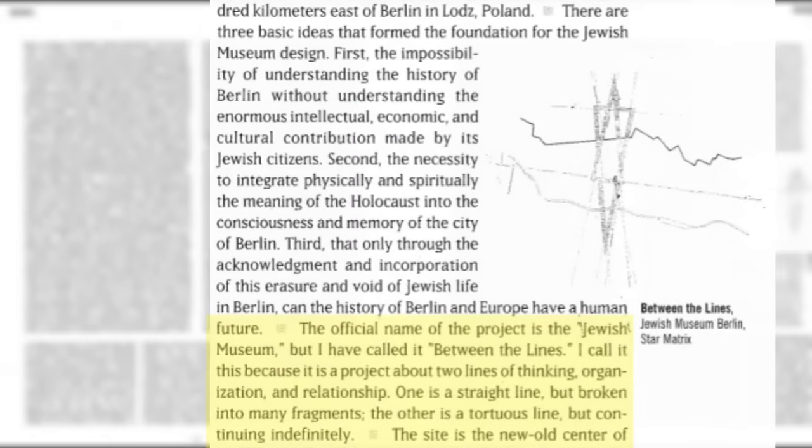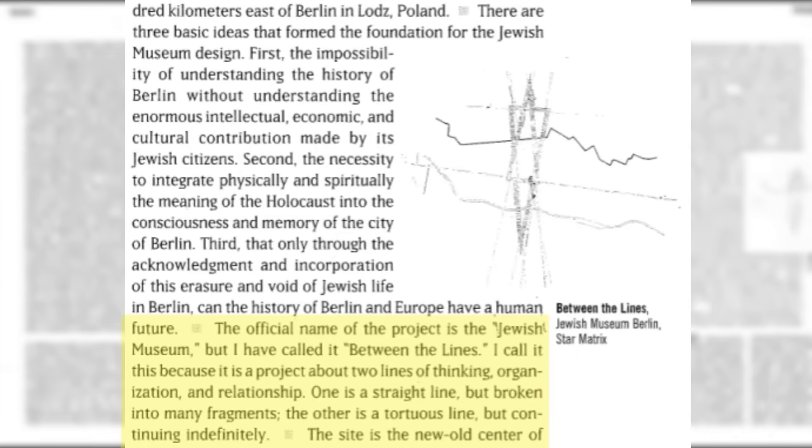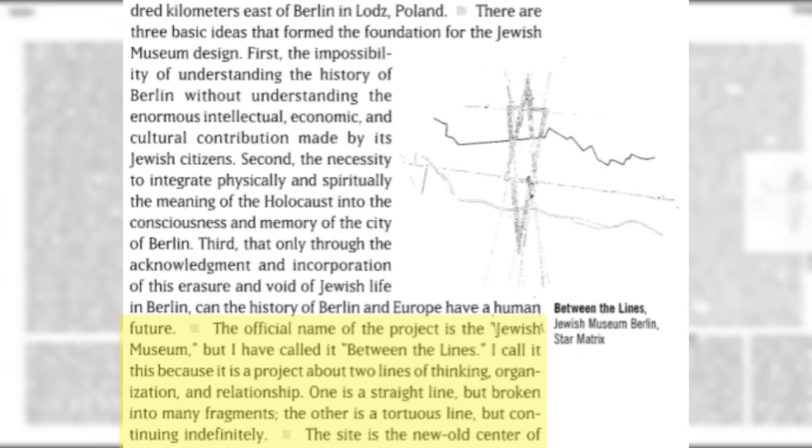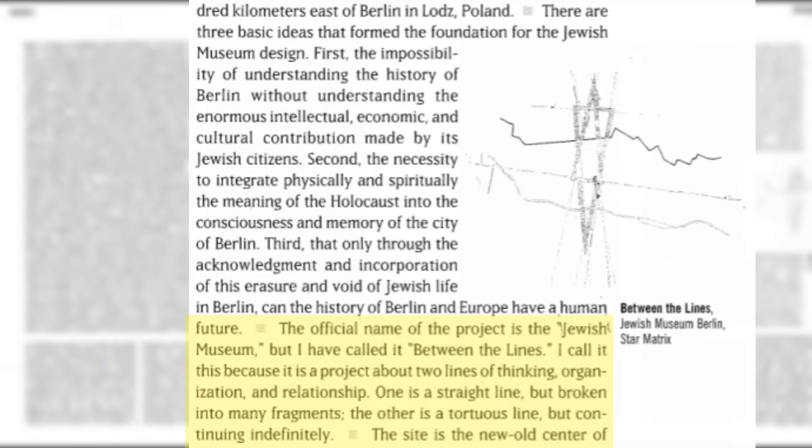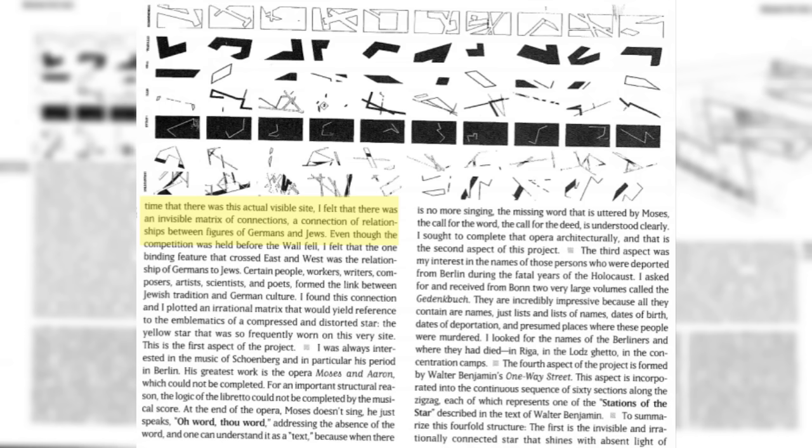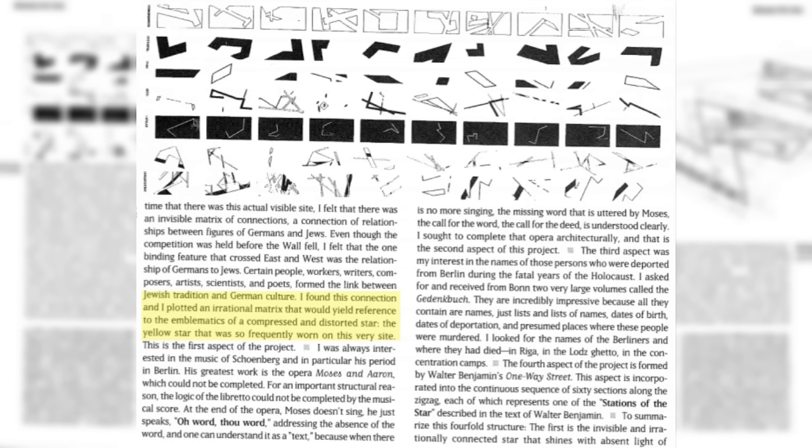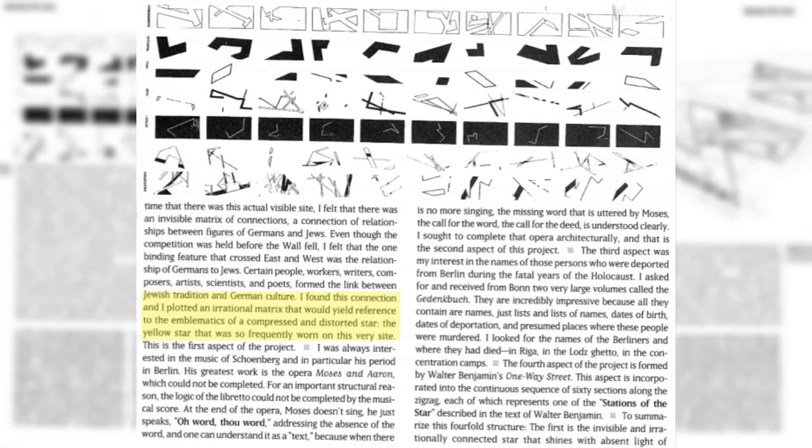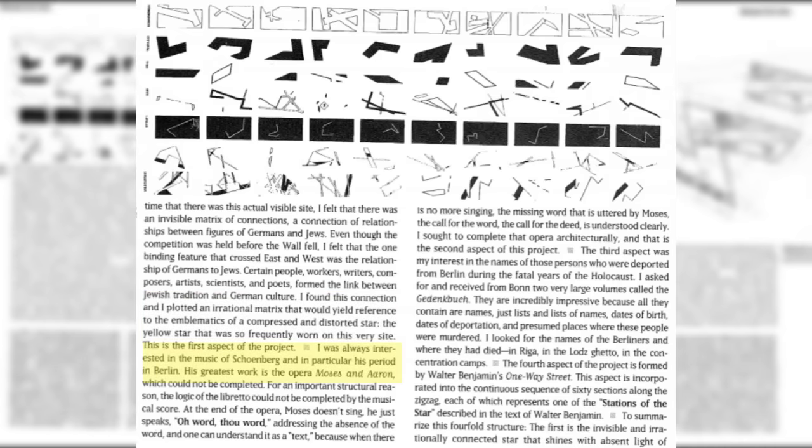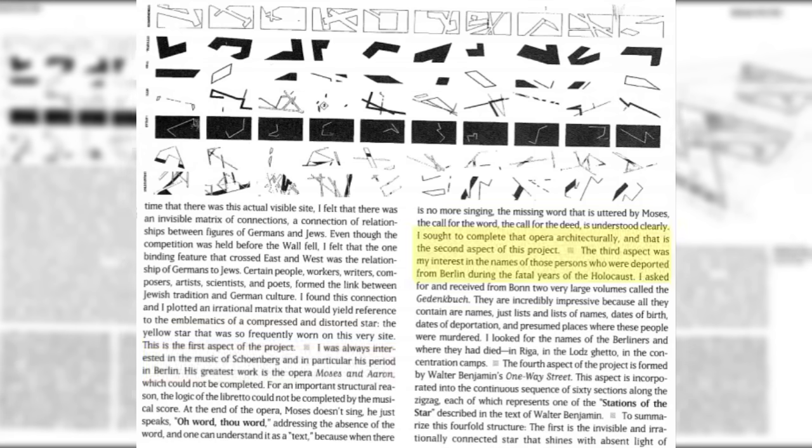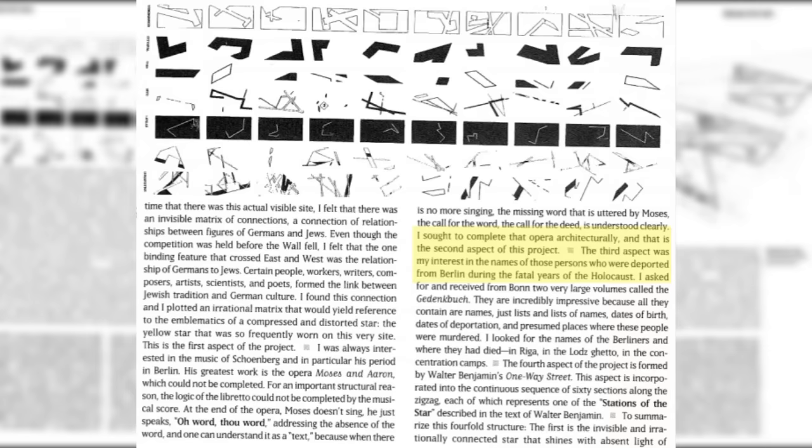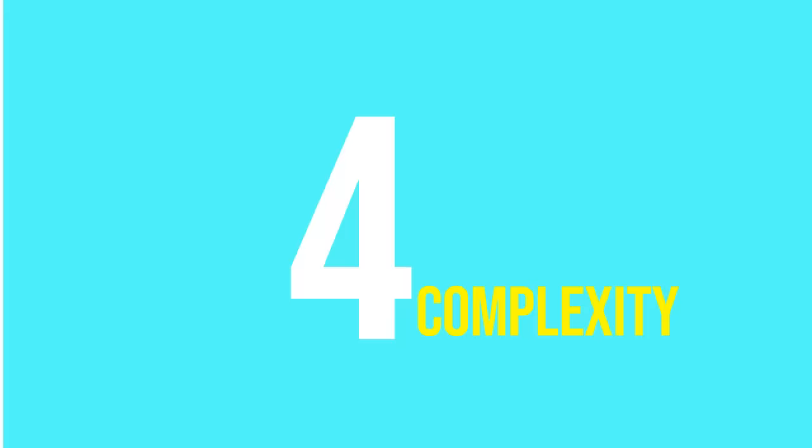The official name of the project is the Jewish Museum, but I have called it Between the Lines. I call it this because it's a project about two lines of thinking, organization, and relationship. One is a straight line but broken into many fragments, the other is a torturous line but continuing indefinitely. I felt that there was an invisible matrix of connection, a connection of relationships between figures of Germans and Jews. I found this connection and I plotted an irrational matrix that would yield reference to the emblematics of a compressed and distorted star, the yellow star that was so frequently worn on this very site. I was also interested in the music of Schoenberg, and in particular his period in Berlin. I sought to complete that opera architecturally, and that is the second aspect of this project. The third aspect was my interest in the names of those persons who were deported from Berlin during the fatal years of the Holocaust. Complexity - complexity is not the same as complicated.